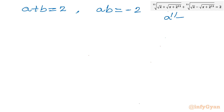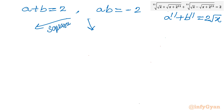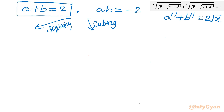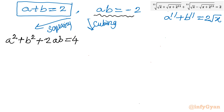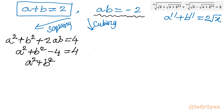Our objective is a^11 + b^11, and we will equate it to √x. So let me do squaring and cubing of the equation a + b = 2. Once I square this equation: a² + b² + 2ab = 4. Now ab = −2, so I write a² + b² − 2×2 = 4, giving a² + b² − 4 = 4.